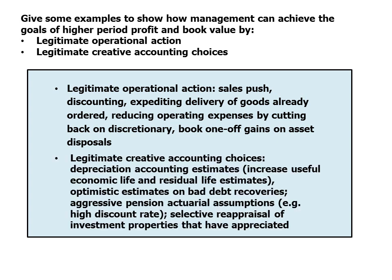Legitimate creative accounting choices to increase profit include: using straight-line depreciation with increased useful economic life and residual value estimates to spread depreciation over a longer period and lower the annual charge; optimistic bad debt recovery estimates; aggressive pension actuarial assumptions such as a higher discount rate than peers; and selective reappraisal of investment properties that have appreciated. All of these increase reported profits.